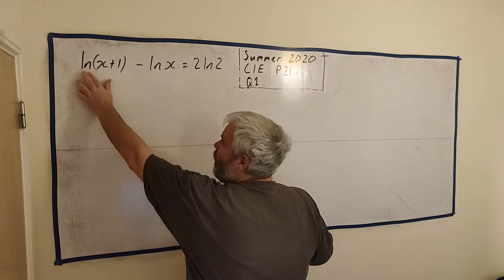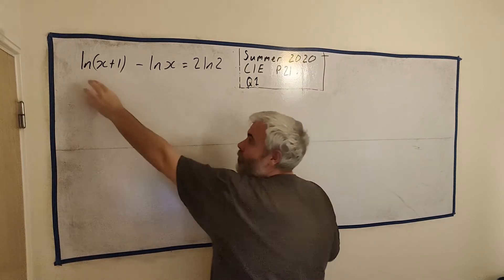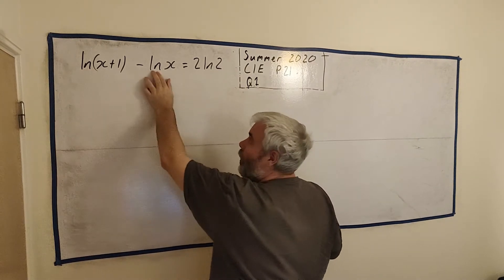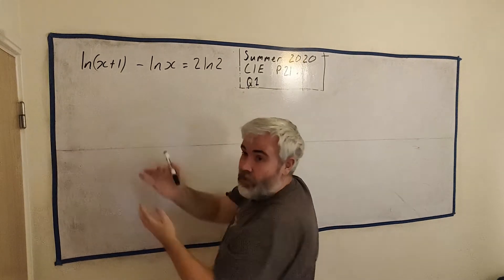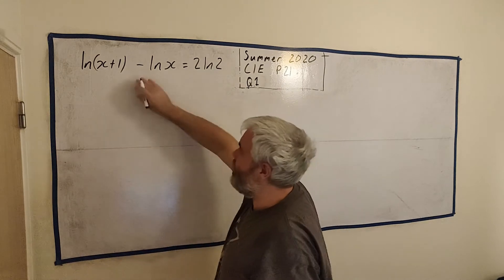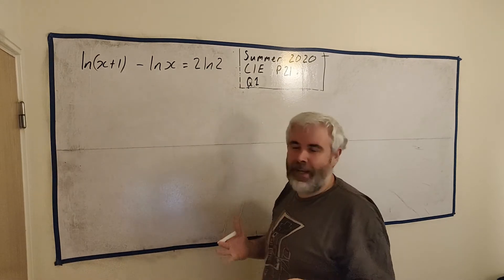For example, two logs with the same base, so this is log to the base e, we call it natural log. When they add together or take away, there's a certain thing that happens. In this case, take away, but really it's the same thing.